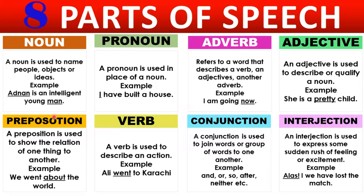Now what is a preposition? As the name says, these are position words or relation words. They show the relation between two things in a sentence — for example, 'he went about...' The word 'about' gives a time or place relation. These are prepositions.